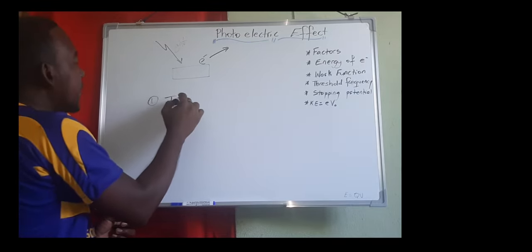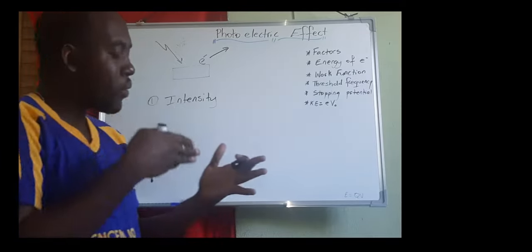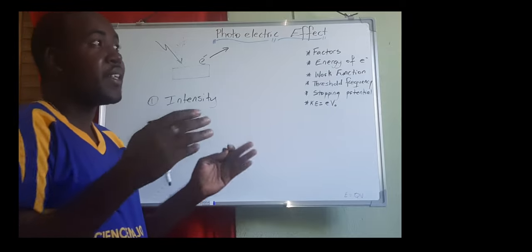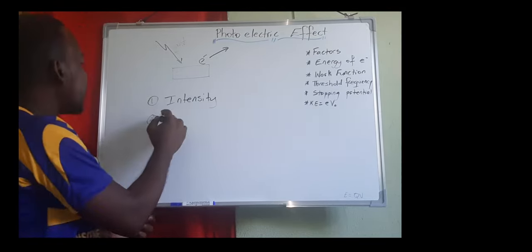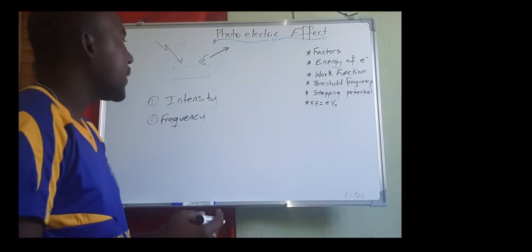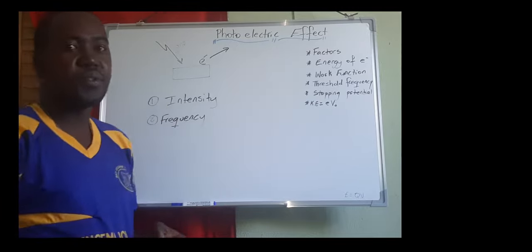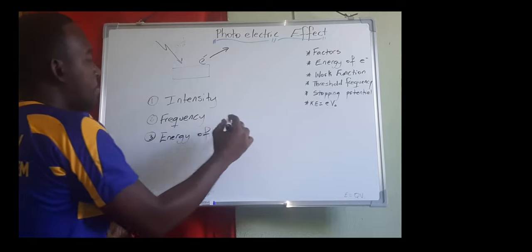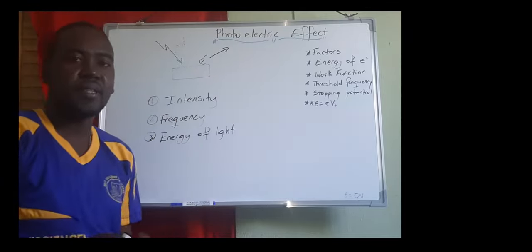The factors that affect whether light will cause electrons to be expelled from a metal are: first, the intensity of the light, which tells us the amount of power emitted to a specific area of the metal — linked to the brightness of the light. Second is the frequency of the light, which relates to how much wave is being produced. Third is the energy of the light — how much energy the light is actually projecting onto the metal.